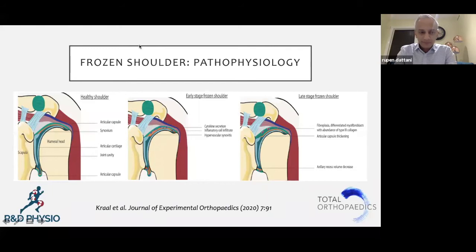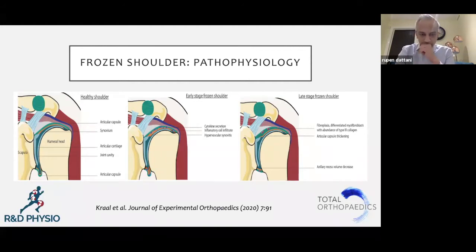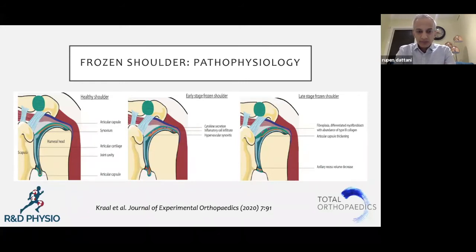So one of the things we've obviously seen is that you have your healthy shoulder, your early frozen shoulder, and then your late frozen shoulder. From your understanding, at what stage do you find that changes can be seen on an X-ray, MRI, or ultrasound, and when are you noticing those changes happening — and at what stage should you intervene?